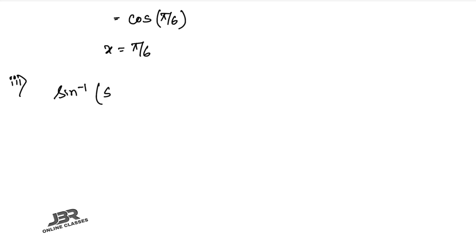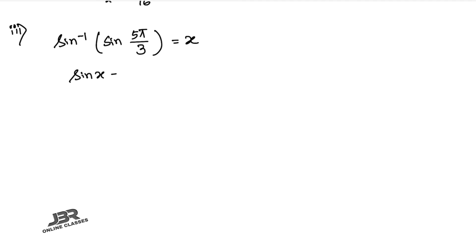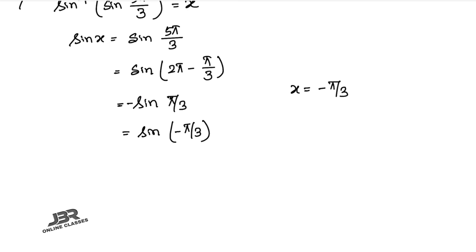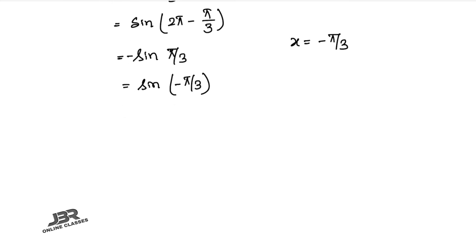Number 7.3: sin⁻¹(sin(5π/3)) = x, so sin x = sin(5π/3). Writing 5π/3 = 2π − π/3, and sin(2π − θ) = −sin(θ), we get −sin(π/3) = sin(−π/3). Therefore x = −π/3.